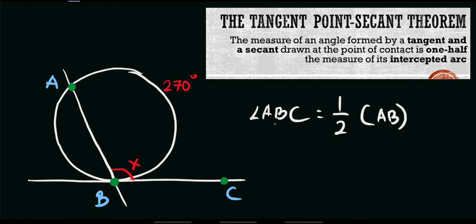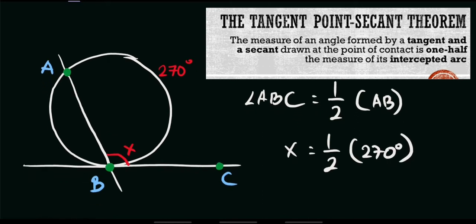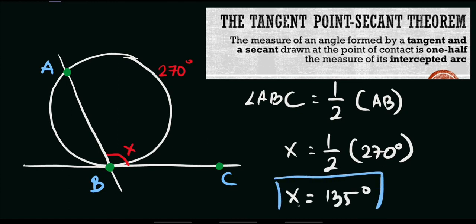Let's substitute the values. ABC, or the value of X, is equals to one half of arc AB. According to our figure, arc AB is equal to 270 degrees. So we divide: half of 270. Therefore, X is equal to 135 degrees. That is our final answer for this given problem — half of 270 is 135 degrees.